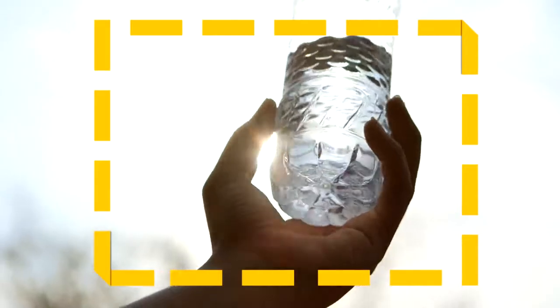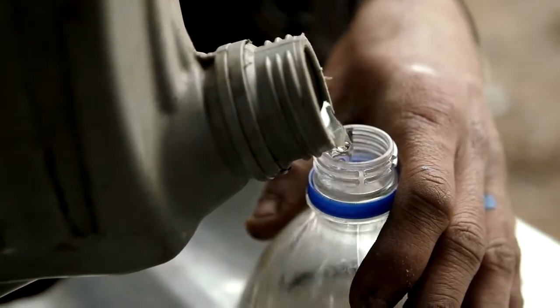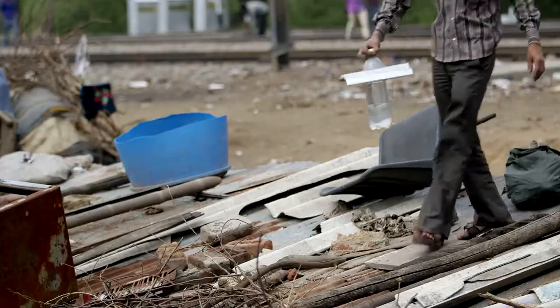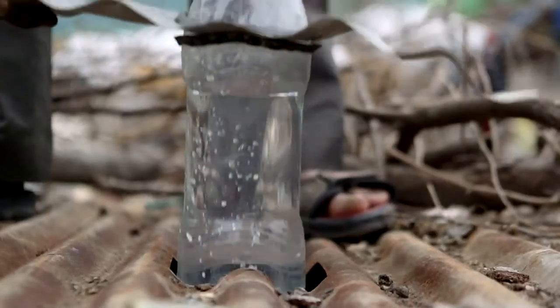Plastic bottles refract light. What if you filled one with water and add a chlorine tablet? Pop it through a hole in the roof and it will give off a glorious glow. By harnessing the sun's energy, thousands of people can have access to indoor lighting.